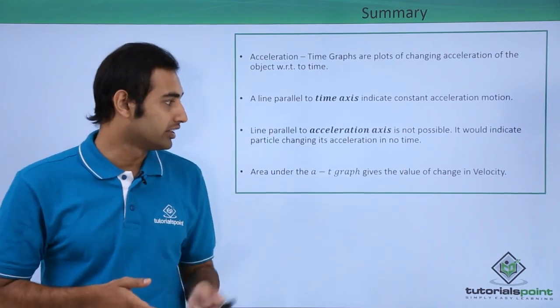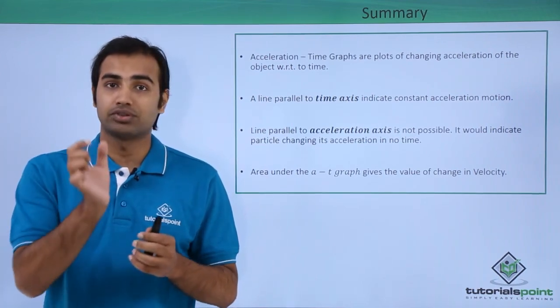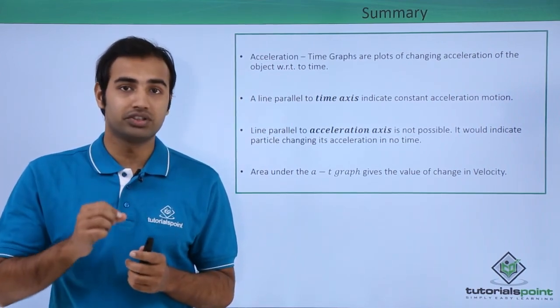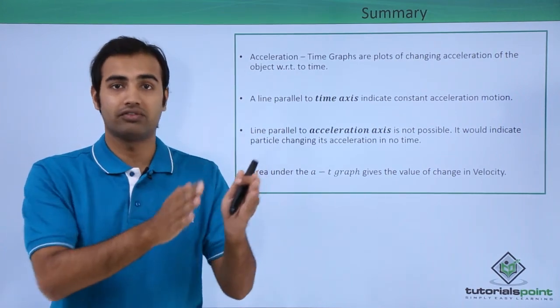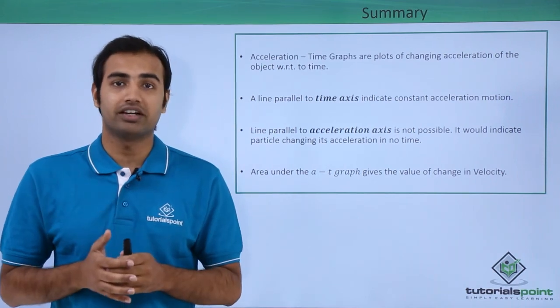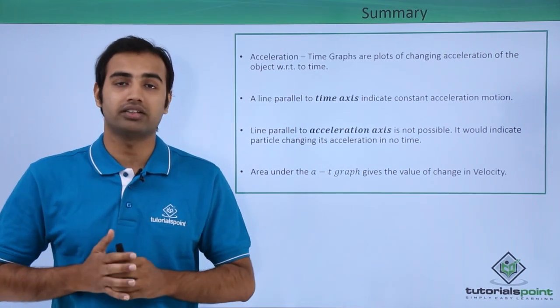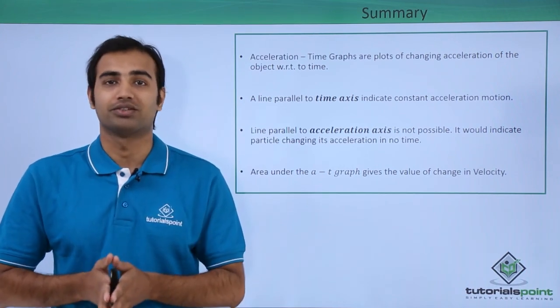Next, area under AT graph gives the value of change in velocity. So it's a very important concept. It does not give you the absolute value of velocity, but it gives you the change in velocity. So you have to add that change to the initial velocity to actually obtain the final velocity. The slope of AT graph is not of much use in kinematics, and we won't be talking about it in detail. I hope this was very clear to you. Thank you.